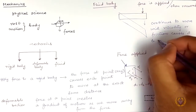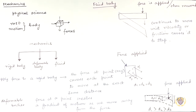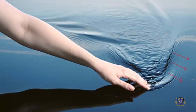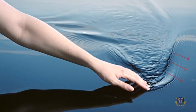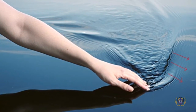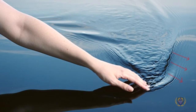Such bodies are called fluid bodies. When someone creates a disturbance in open water, the water continues to deform until the viscosity of the water and the friction exerted by the air over it calms it down.